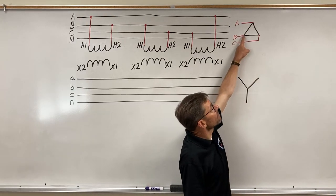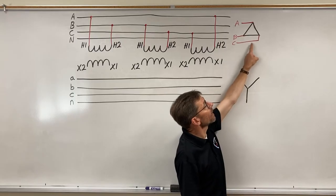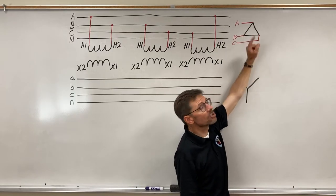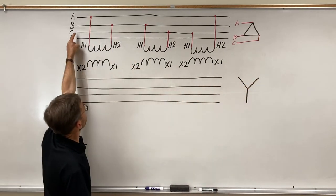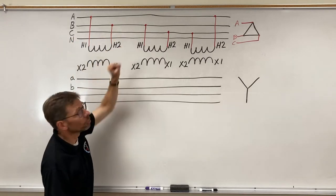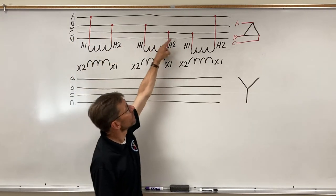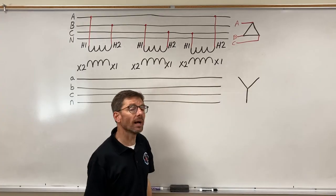Line B connects to two windings, and line C connects to two windings. You'll see that line B, two windings. Line C, two windings.